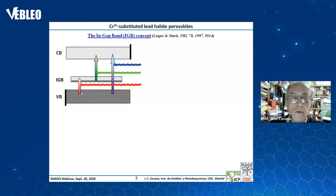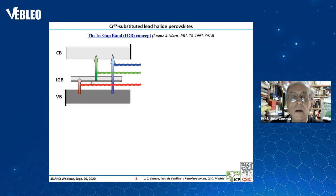If you have a valence band and conduction band in a semiconductor, and you introduce an ingap band in between the two main bands, then it is possible to achieve the transition of an electron from the valence band to the conduction band not only directly but also in two steps, as is the case that you are seeing here.